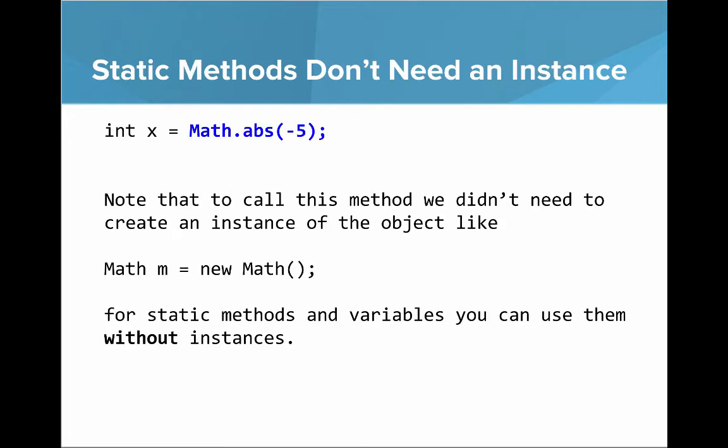The key point is that static methods don't need an instance. In the line x = Math.abs(-5), we didn't need to create an instance like Math m = new Math(). For static methods and variables, you can use them without instances — that's the really key point with static and class methods and variables.